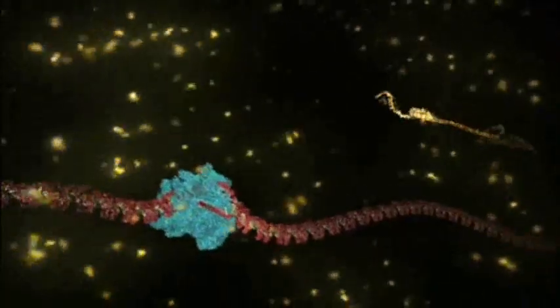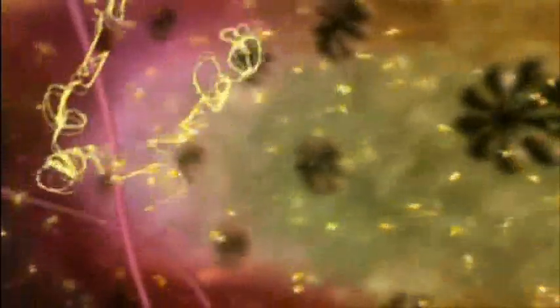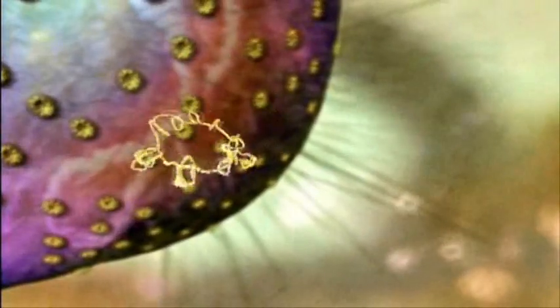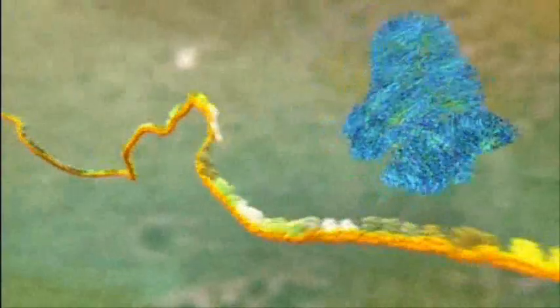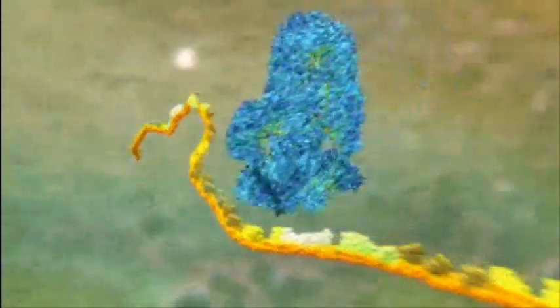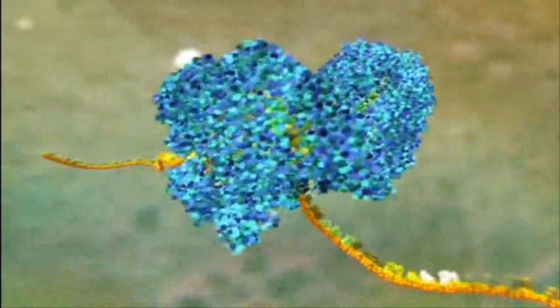When the RNA copy is complete, it snakes away from the nucleus and into the outer part of the cell. Then, in a dazzling display of choreography, all the components of another molecular machine lock together around the RNA to form a miniature factory called a ribosome.